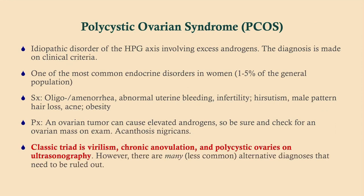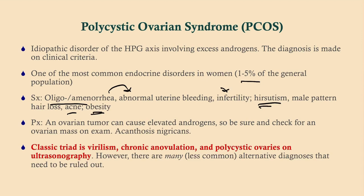PCOS — this is idiopathic, so don't worry about the mechanism. It is one of the most common endocrine disorders in women. The symptoms are based on the fact that this is a hormonal problem, so patients often present with oligo- or amenorrhea, which results in abnormal uterine bleeding and infertility. They can have hirsutism due to increased testosterone, which can result in male-pattern hair loss as well as acne, and they can also have obesity. The pathophysiology is extensive, so don't worry about that.